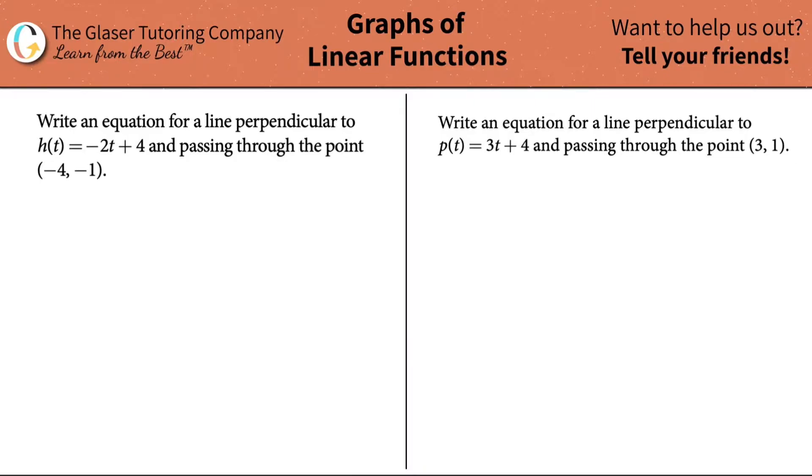Write an equation for a line perpendicular to h(t) = -2t + 4 and passing through the point (-4, -1).